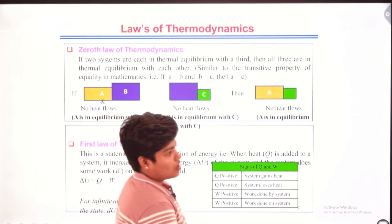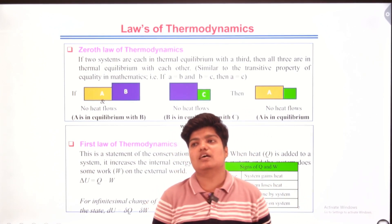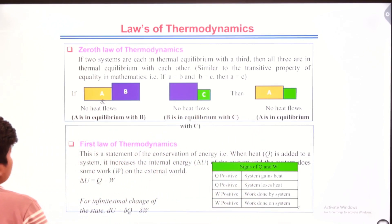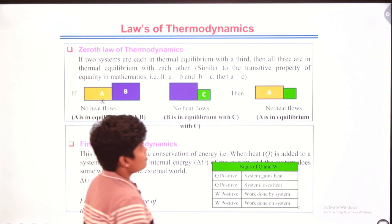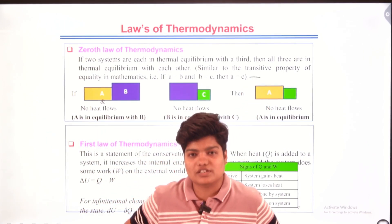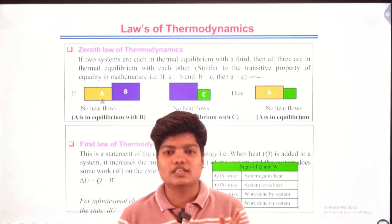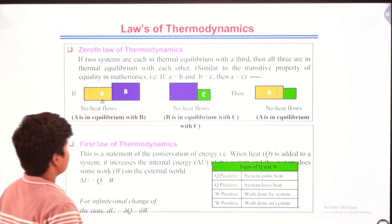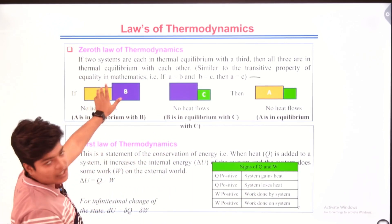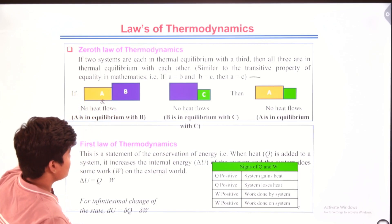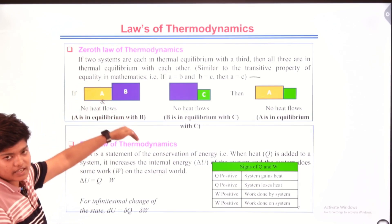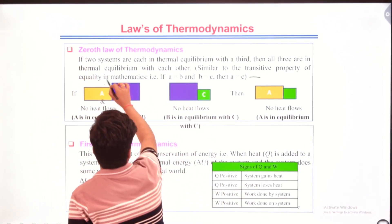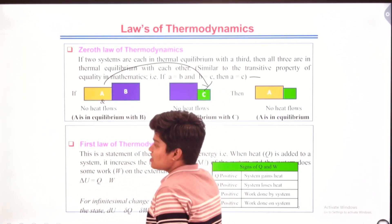Now we will discuss the laws of thermodynamics. There are four laws: zeroth law, first law, second law, and third law. The zeroth law is similar to the transitive property in mathematics. If system A is in equilibrium with B, and B is in equilibrium with C, then A will be in equilibrium with C. Equilibrium here means no heat flows — no heat is gained or lost.